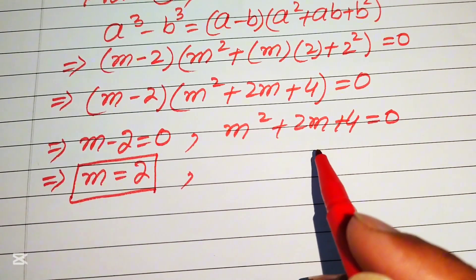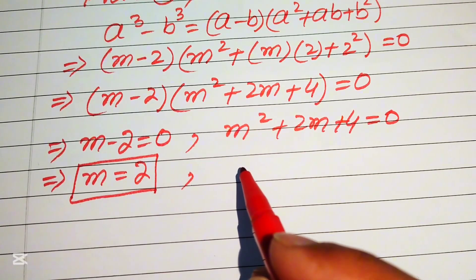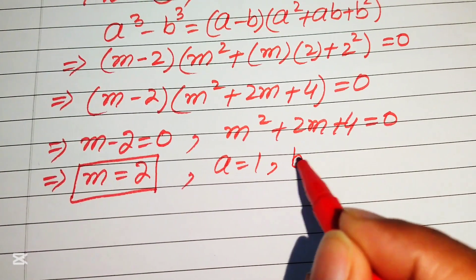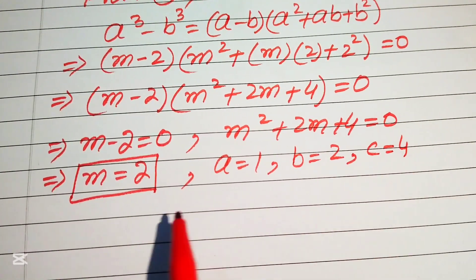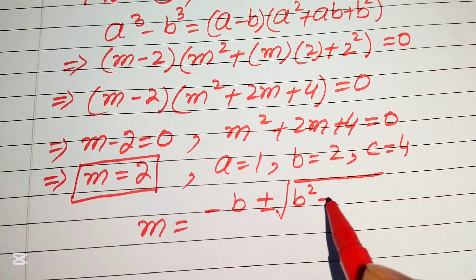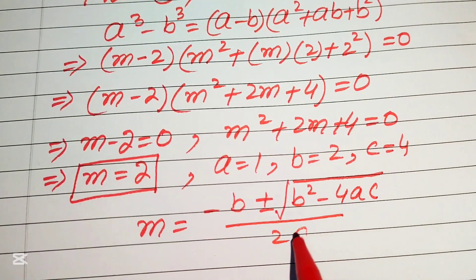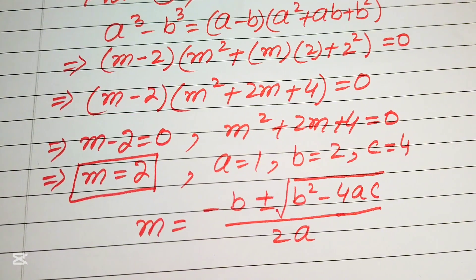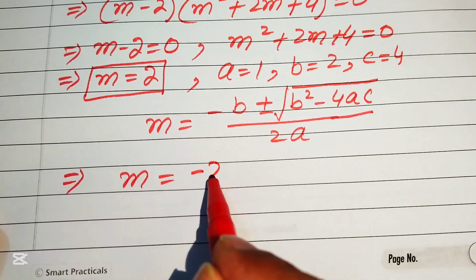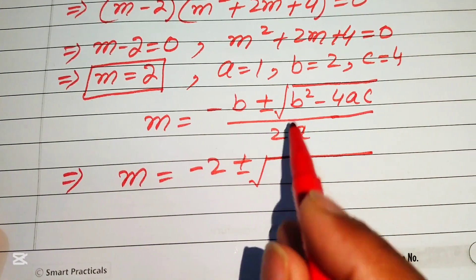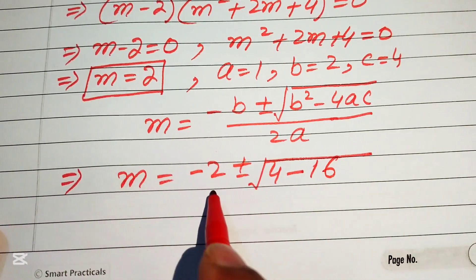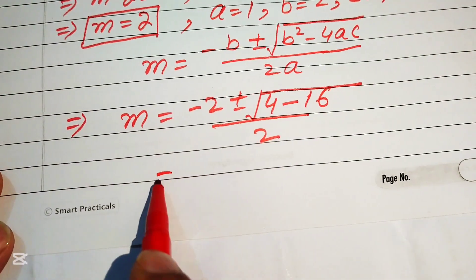To solve the quadratic m² plus 2m plus 4 equals 0, we use the quadratic formula. The coefficients are a equals 1, b equals 2, and c equals 4. The quadratic formula gives m equals minus b plus or minus square root of (b² minus 4ac) divided by 2a. Substituting, we get m equals minus 2 plus or minus square root of (4 minus 16) divided by 2.